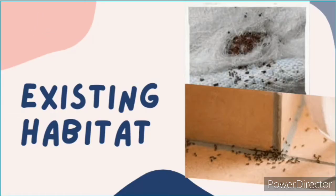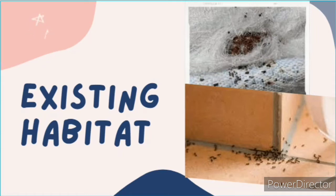The first characteristic is an existing suitable habitat. For any pest to be able to stay, it needs an existing suitable habitat. For an animal to survive, it needs suitable food, it needs shelter, and it needs a very suitable breeding place. So the first characteristic of a pest is an existing suitable habitat.